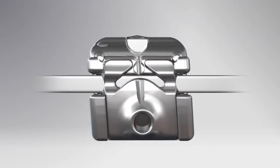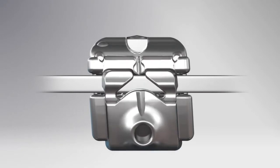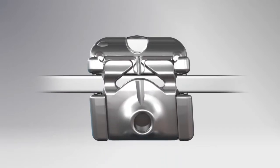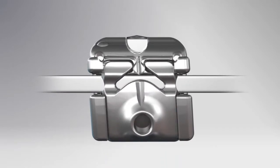To allow for quick and easy archwire changes, the door simply opens using the Carrier instrument, which fits perfectly in the small round indent on the labial side of the bracket, and then, with gentle finger pressure, the door closes.